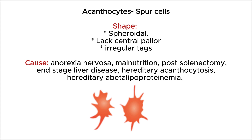Acanthocytes have a variable size of tags located irregularly on the cell surface. This condition is caused by anorexia nervosa, malnutrition, post-splenectomy, end-stage liver disease, hereditary acanthocytosis, and hereditary abetalipoproteinemia.